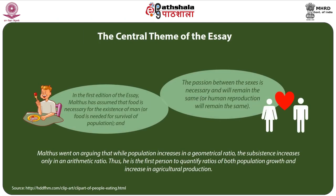What is the central theme of the essay? In the first edition, Malthus assumed that food is necessary for the existence of man, and that the passion between the sexes is necessary and will remain the same — that is, human reproduction will remain constant. After accepting these two natural laws, Malthus argued that while population increases in a geometrical ratio, subsistence increases only in an arithmetic ratio. He is thus the first person to quantify ratios of both population growth and increase in agricultural production.